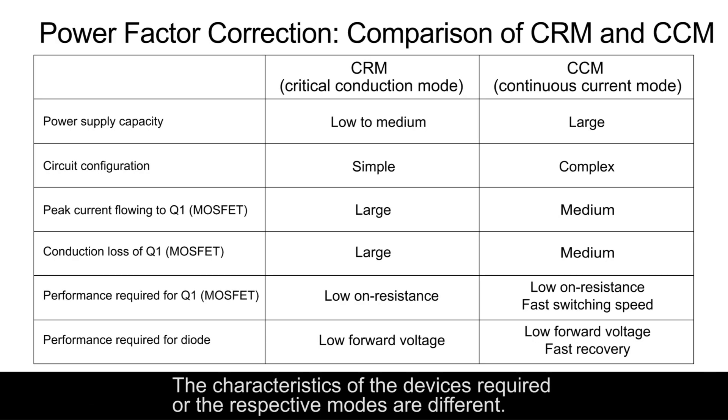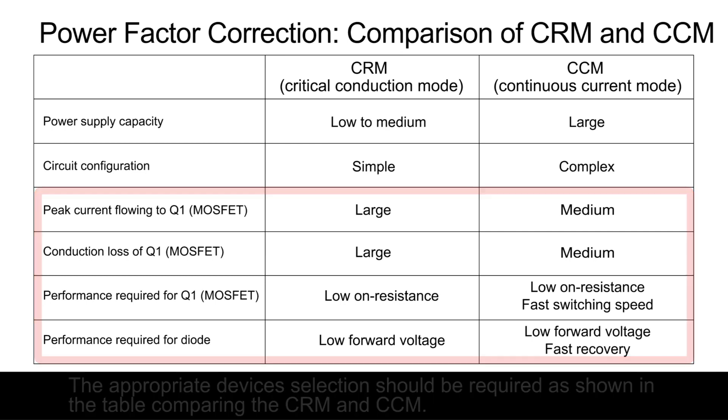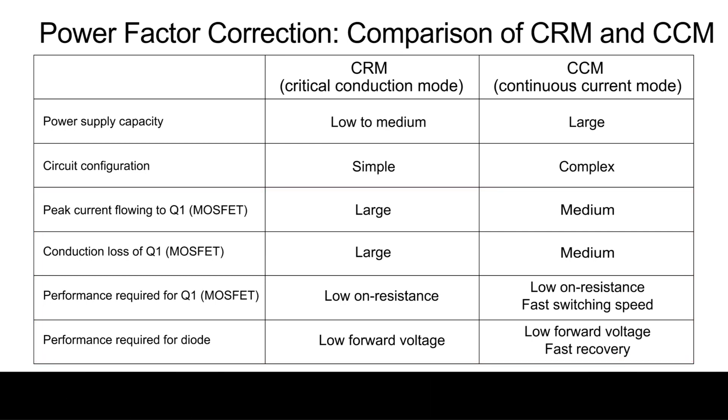The characteristics of the devices required for the respective modes are different. The appropriate devices selection should be required as shown in the table comparing the CRM and CCM. This concludes the explanation of the power factor correction and power factor correction circuit.